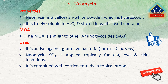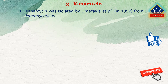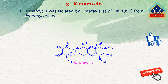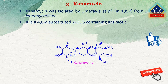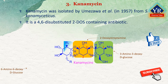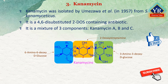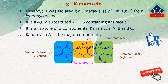Neomycin sulfate has been used for bowel preparation before surgery and selective decontamination of the gastrointestinal tract. The last drug of this lesson is kanamycin. Kanamycin was isolated by Umezawa et al. from the cultures of Streptomyces kanamyceticus obtained from soil in the Nagaru district of Japan. It is a 4,6-di-substituted 2-deoxystreptamine-containing antibiotic built up from three subunits: 2-deoxystreptamine and two amino sugars. Kanamycin is a mixture of three components: kanamycin A, kanamycin B, and kanamycin C, of which kanamycin A is the major component.